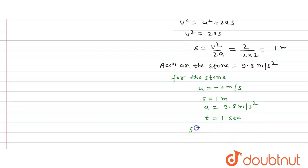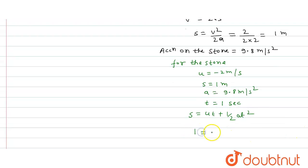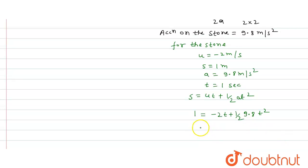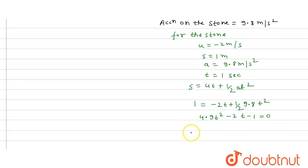Applying s = ut + ½at²: 1 = -2t + ½ × 9.8 × t². This gives us 4.9t² - 2t - 1 = 0, which is a quadratic equation.